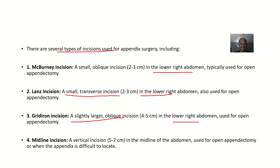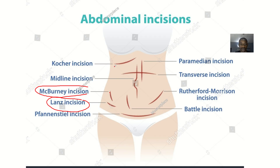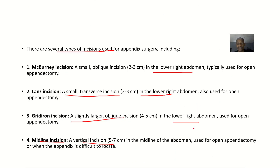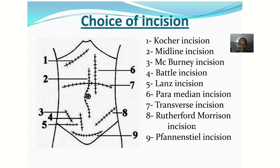The midline incision is a vertical incision in the midline of the abdomen — you go around the umbilicus. It is done in the midline of the abdomen and is used for open appendectomy or when the appendix is difficult to locate, which is why you have to do a very long incision.